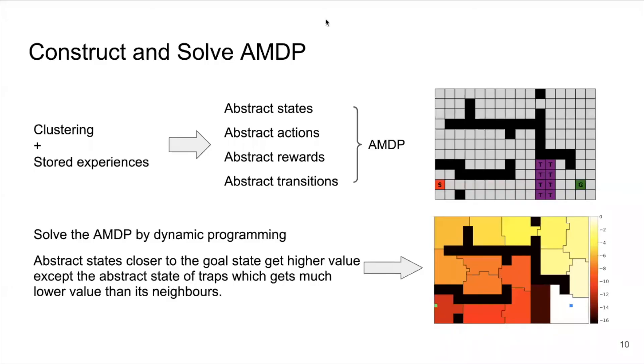The combination of clustering and stored experiences can induce a complete AMDP. Then the solved AMDP is presented on the right side below, where abstract states closer to the goal state get higher values, except the abstract state of traps, which gets much lower value than its neighbors. One can try to simulate a successful path to the goal by following the color on the heatmap from darker to lighter regions, where traps will certainly be avoided.